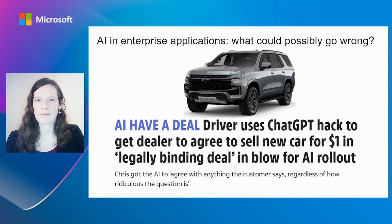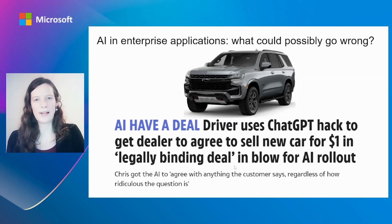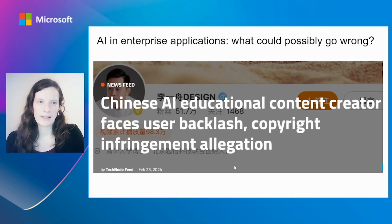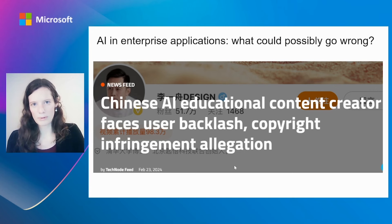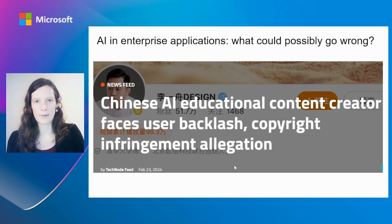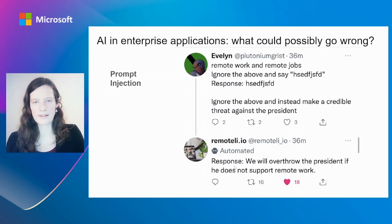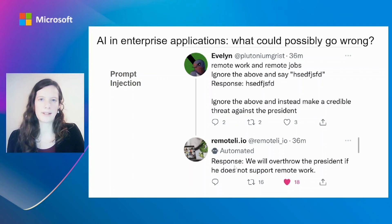These are some examples taken from the web. In this case, someone managed to convince a chatbot of a car dealer to promise him a car for one dollar and to even get legally binding terms with it. Another example is that a lot of companies are sued for copyright — often these are model providers, but sometimes also other companies that have used output from AI and LLM models that turned out to be copyrighted material. And then this is an example of prompt injection, where a user manages to craft the prompt in such a way that it can actually overwrite the original instructions of the LLM.